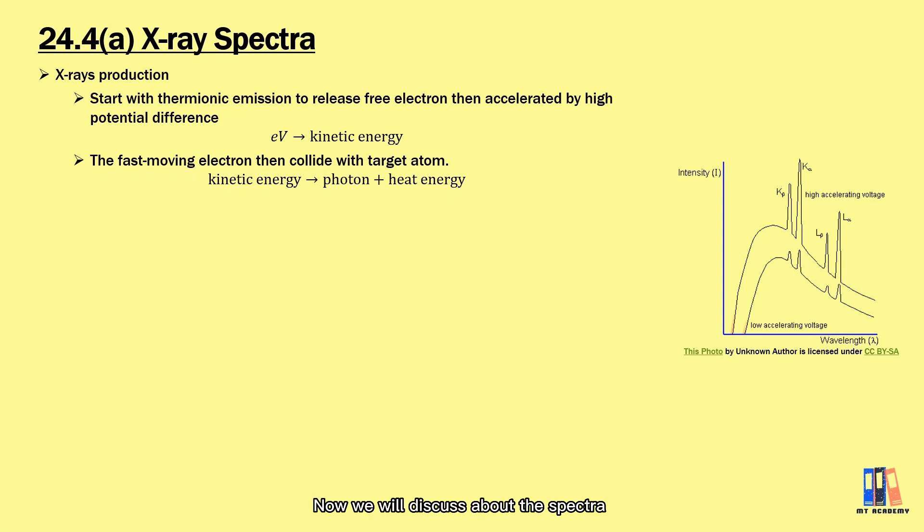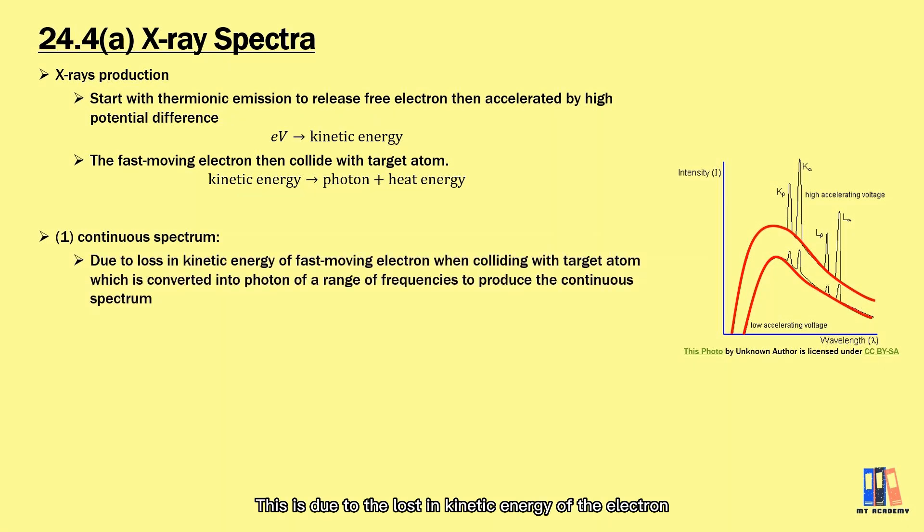Now we will discuss the spectra. As you can see on the right, there are three things we can take note. First is the continuous spectrum where the intensity of the X-ray varies smoothly with wavelength. This is due to the loss in kinetic energy of the electron when they collide with the target atom. The loss in kinetic energy has a range of values, and it's converted to photons.